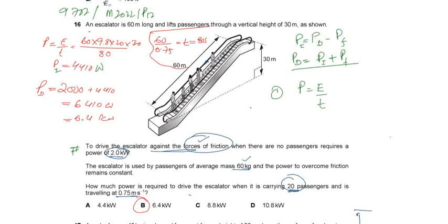The escalator is used by passengers of average mass 60 kilograms, and the power to overcome friction remains constant. So the friction remains constant whether there are any passengers of average weight 60 kilograms. Whatever the number of passengers is, the friction is constant.